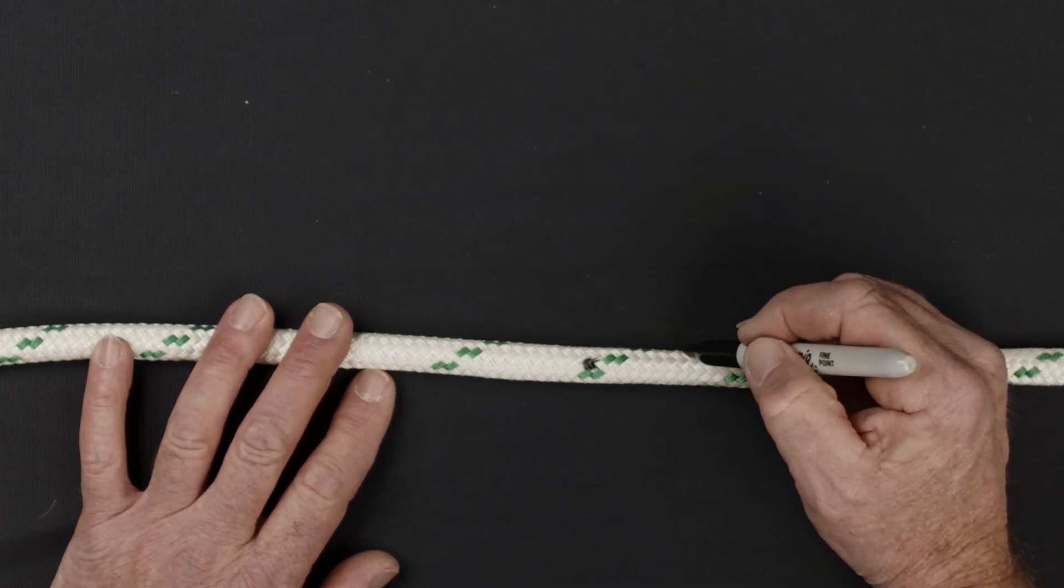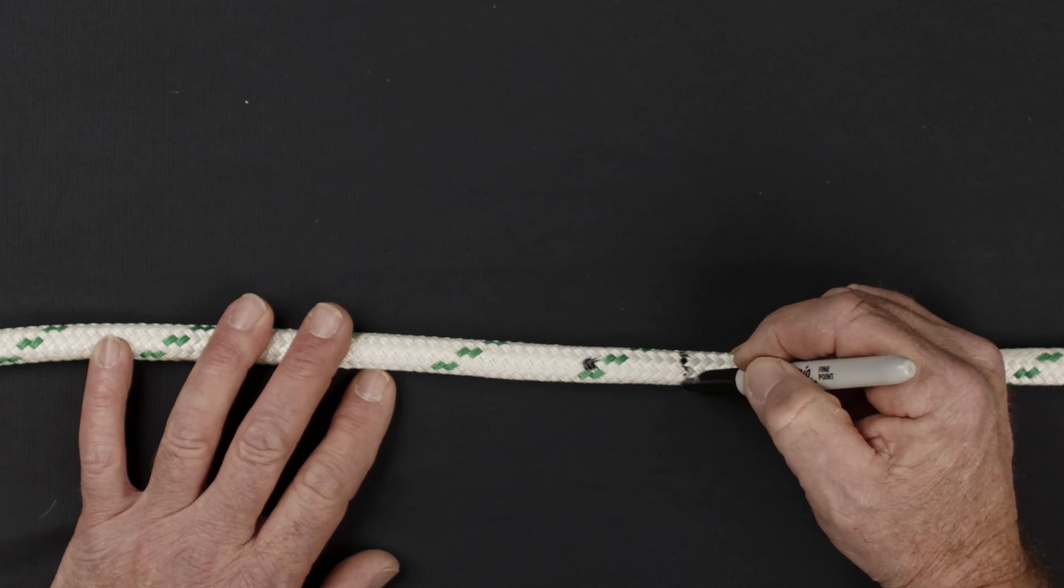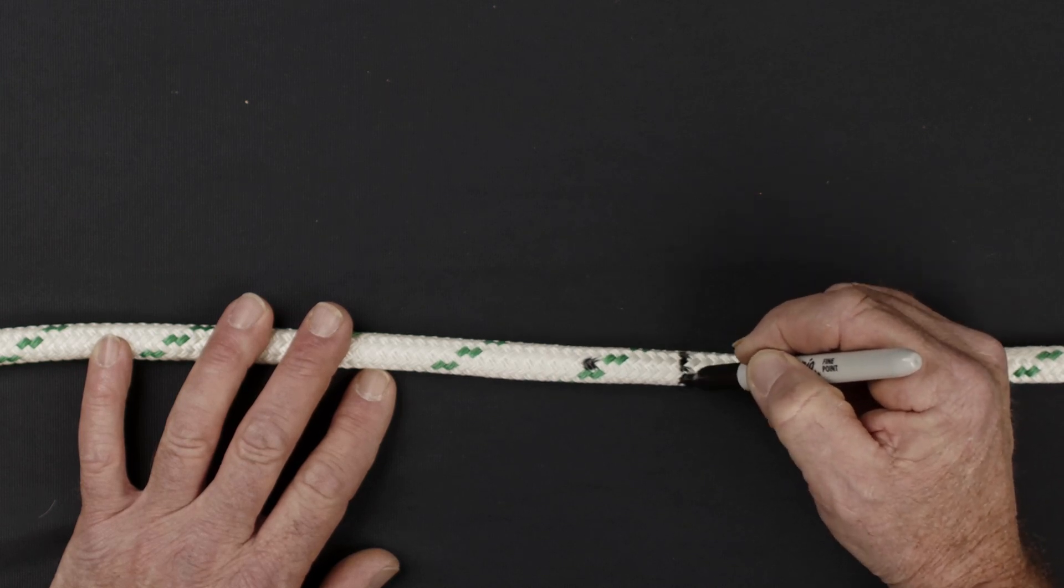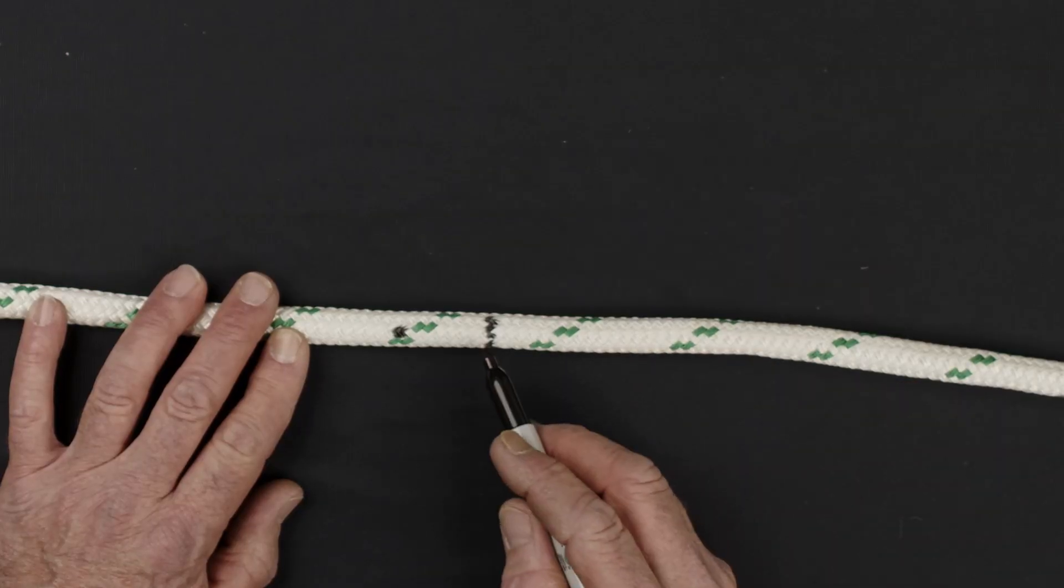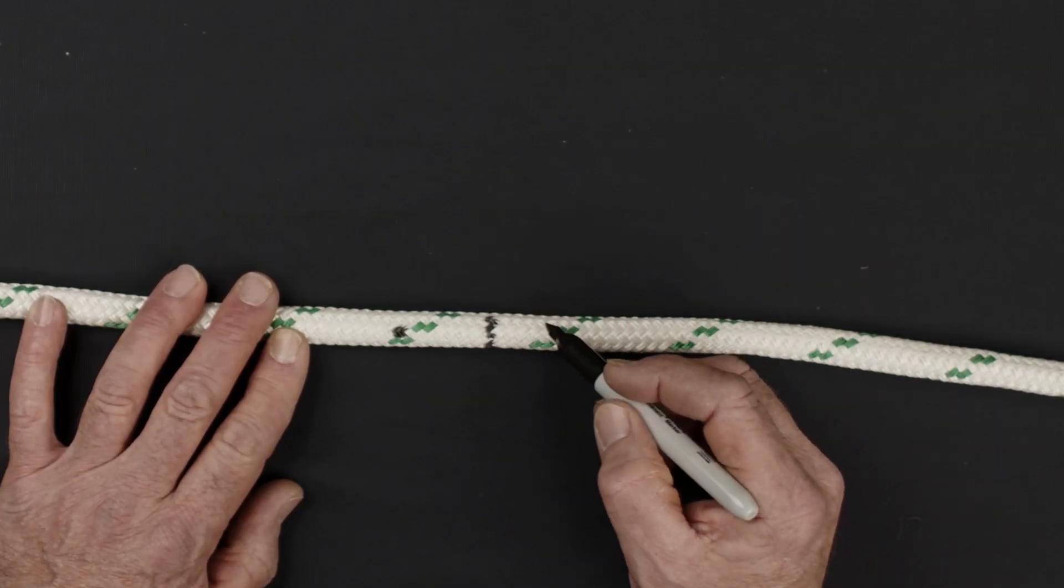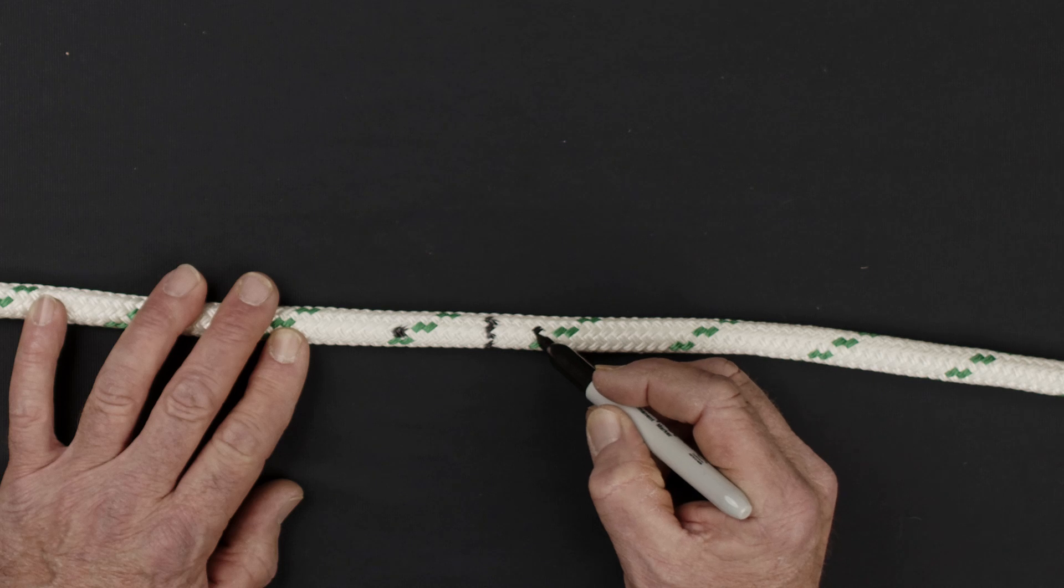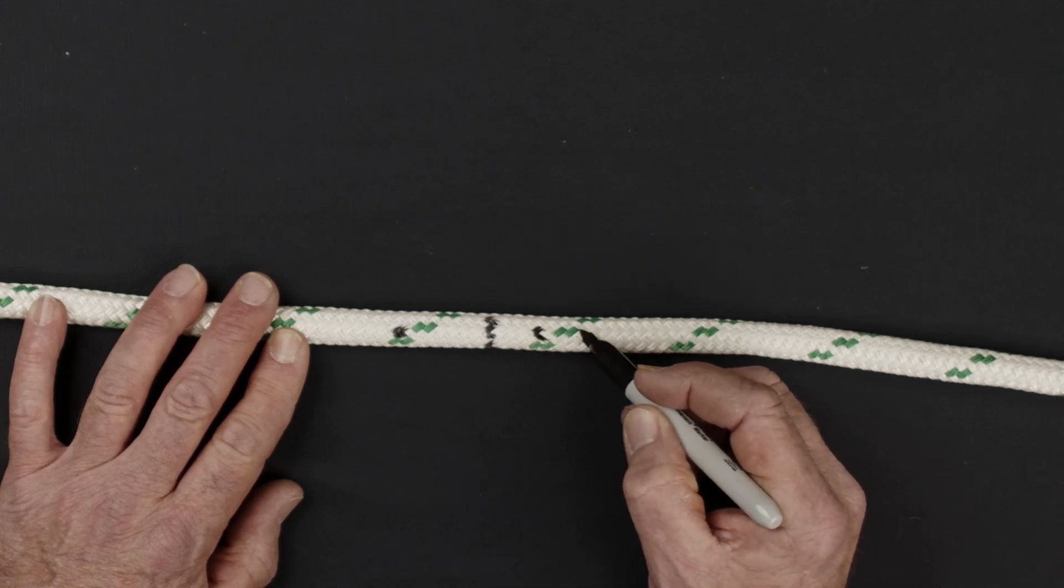From the first eye mark, count down eight strand pairs and draw a line across the width of the rope. From this line, count down and mark the fourth, eighth, and thirteenth strand pair in the cover of the rope.